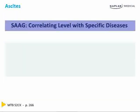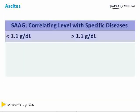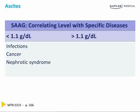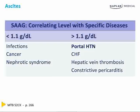Calculating the SAG correlates with specific diseases. When you have a SAG ratio less than 1.1, you know your ascites is coming from either an infection, cancer, or nephrotic syndrome. If your SAG is greater than 1.1, you know your ascites is coming from portal hypertension, CHF, a hepatic vein thrombosis, or constrictive pericarditis.